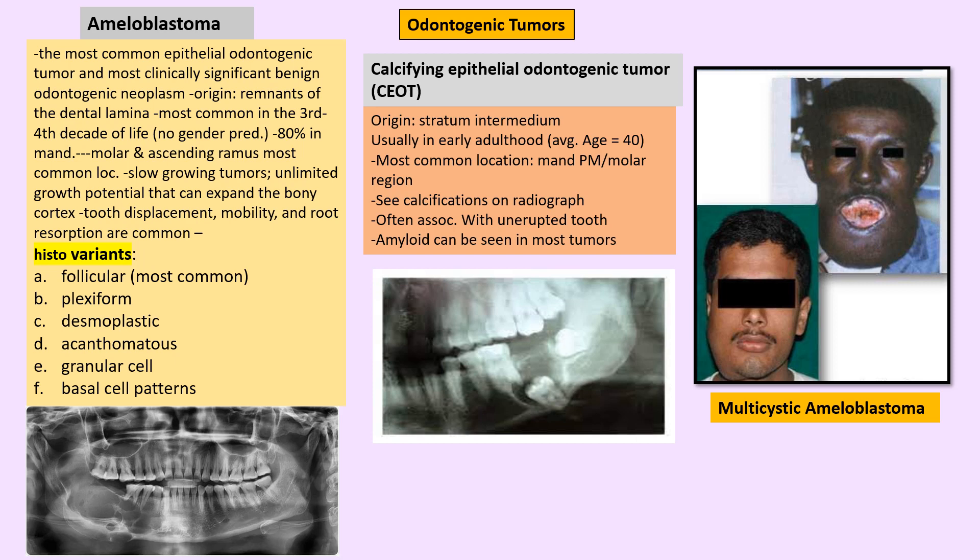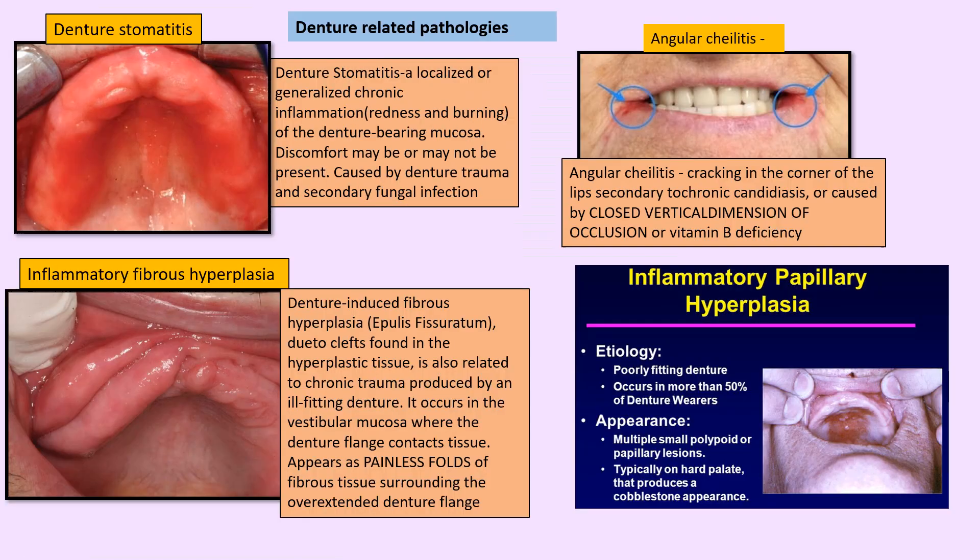CEOT (Calcifying Epithelial Odontogenic Tumor) — don't confuse with the calcifying epithelial odontogenic cyst (Gorlin cyst). This is an odontogenic tumor arising from the stratum intermedium, mostly in the mandibular premolar-molar area. Calcification is visible on radiograph, associated with unerupted teeth, and amyloid can be seen histologically.